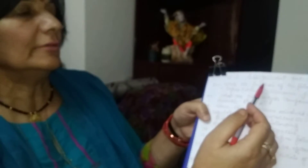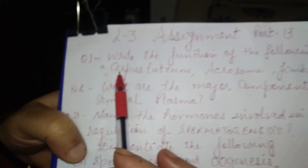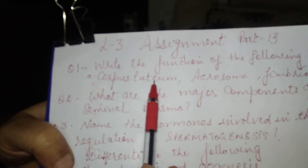Question number one: write the function of the following — number one, corpus luteum; number two, acrosome; and number three, fimbria. In this, you have to write at least one function of each of the three.